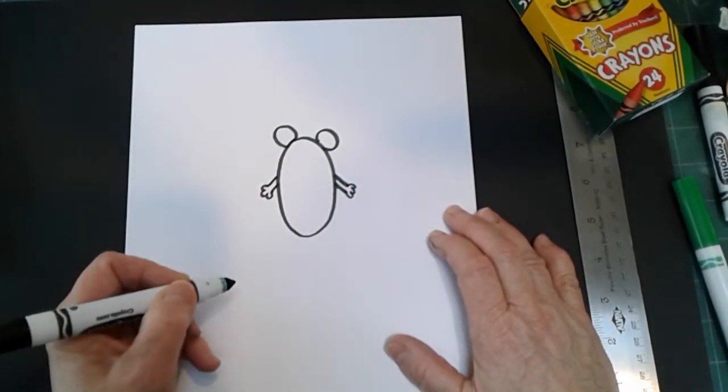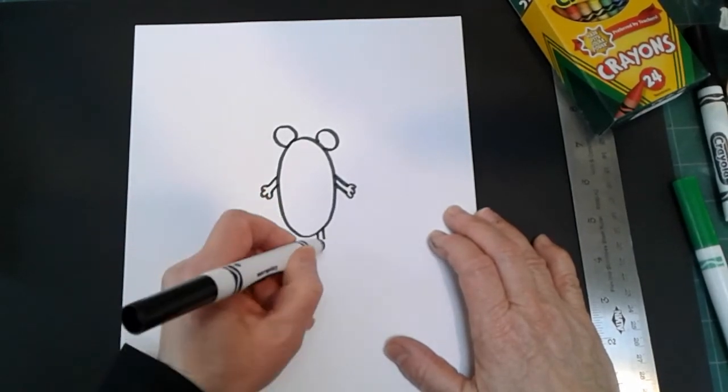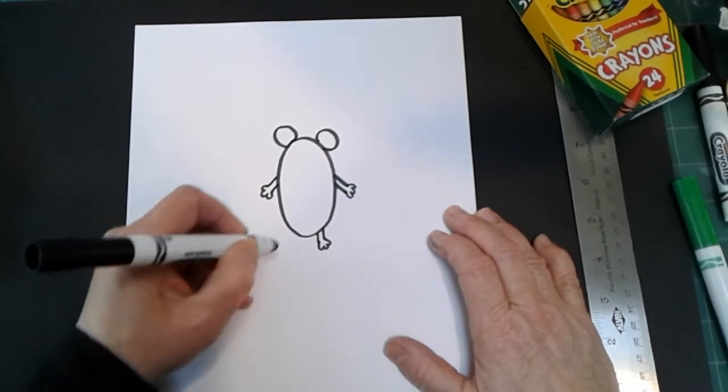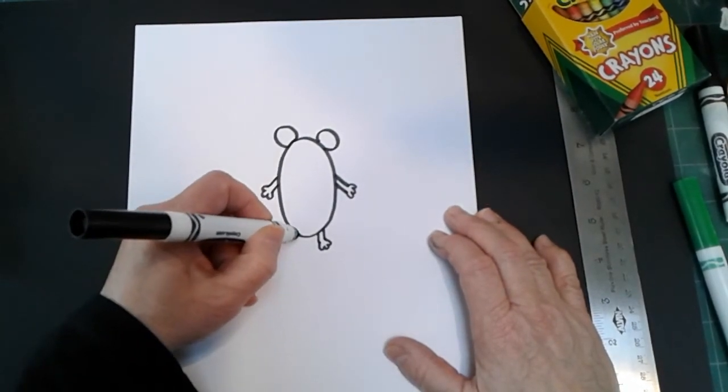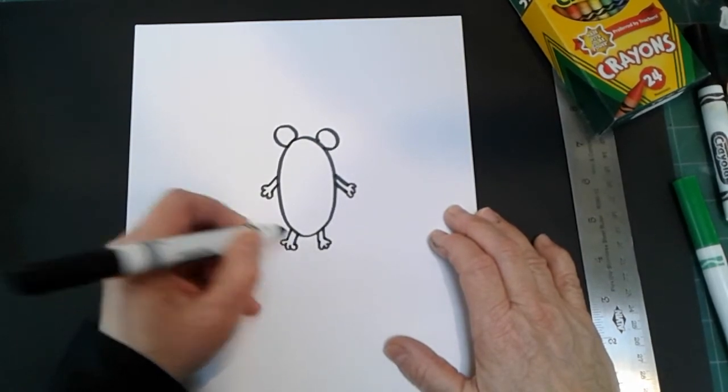The same thing for his legs. Two straight lines, and three little loops. Two straight lines, and three little loops.